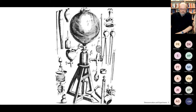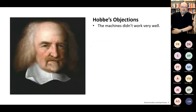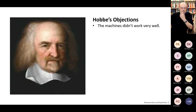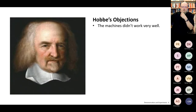They believed they were on the verge of a new form of knowledge — an institution they called experimental philosophy. Around the same time came objections from Thomas Hobbes, one of the most prestigious philosophers of the era, around 1660–1661. He had a number of objections to Boyle and Hooke's experiments. First, he said you can't prove these things as scientific facts — you can't use these to produce matters of fact because, among other things, the machines didn't work very well.